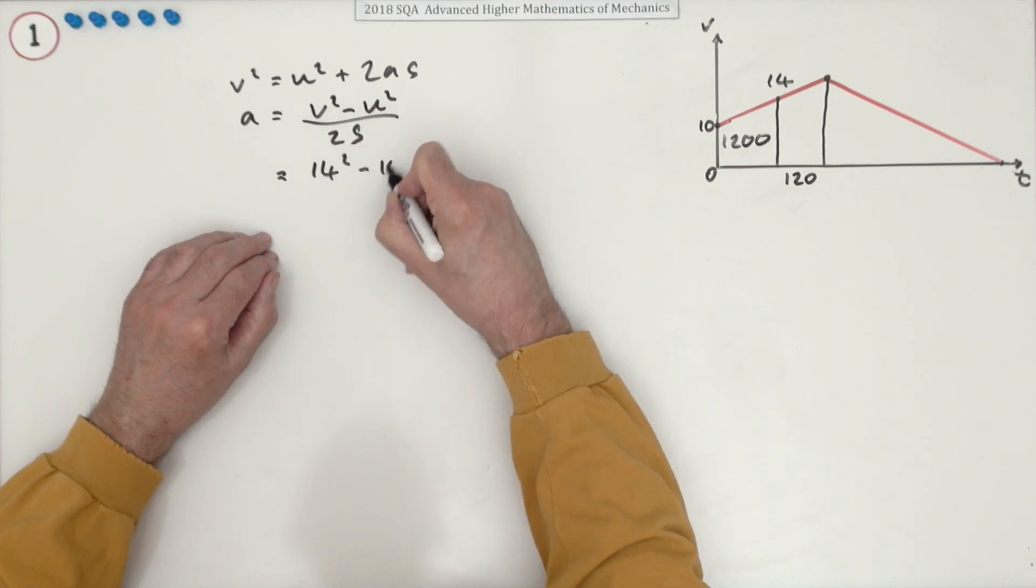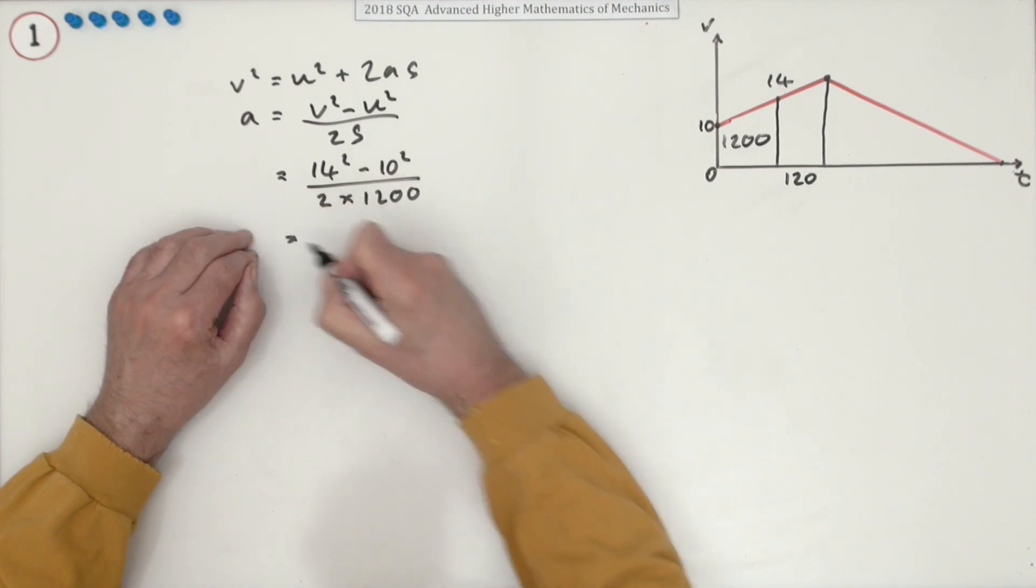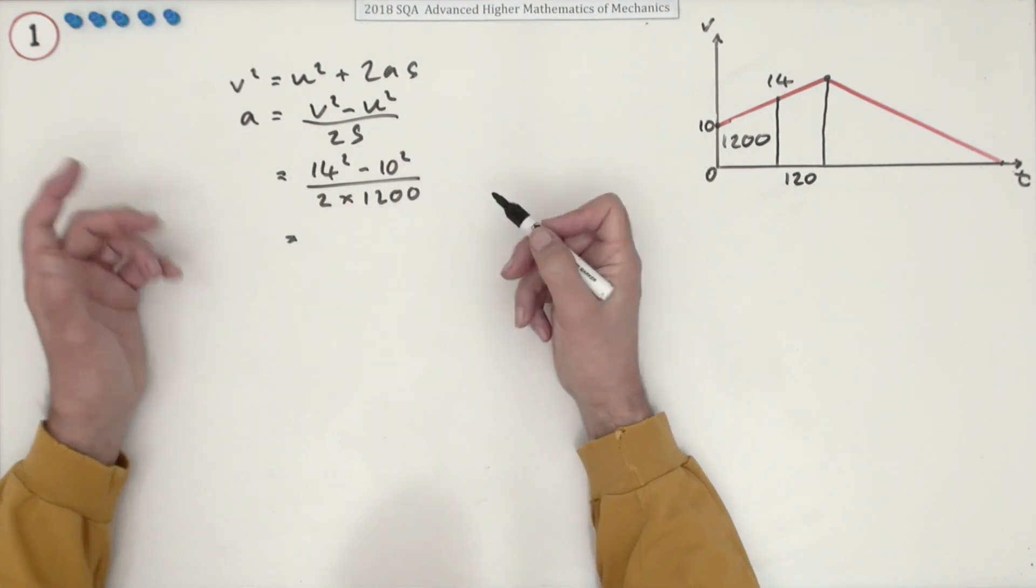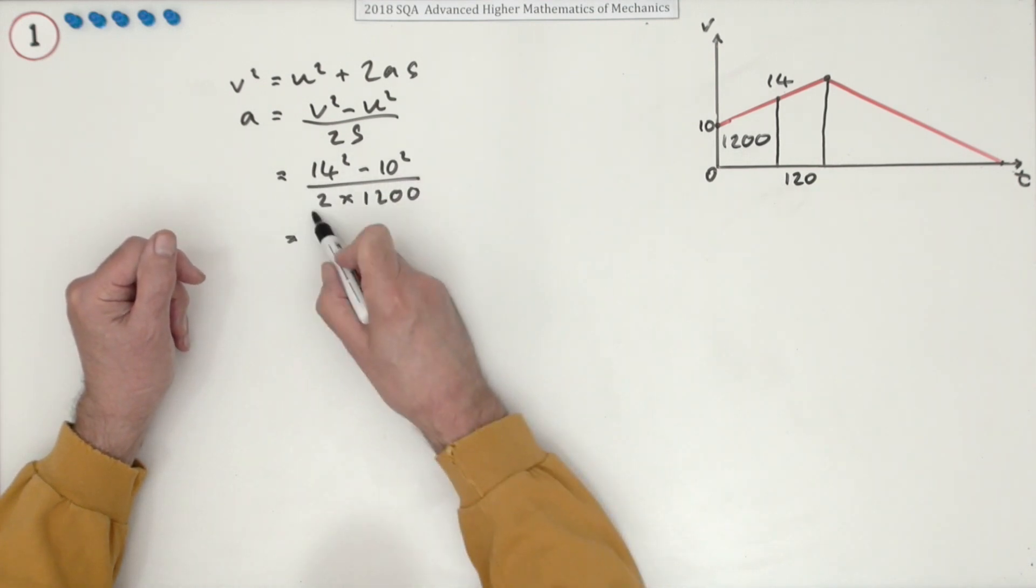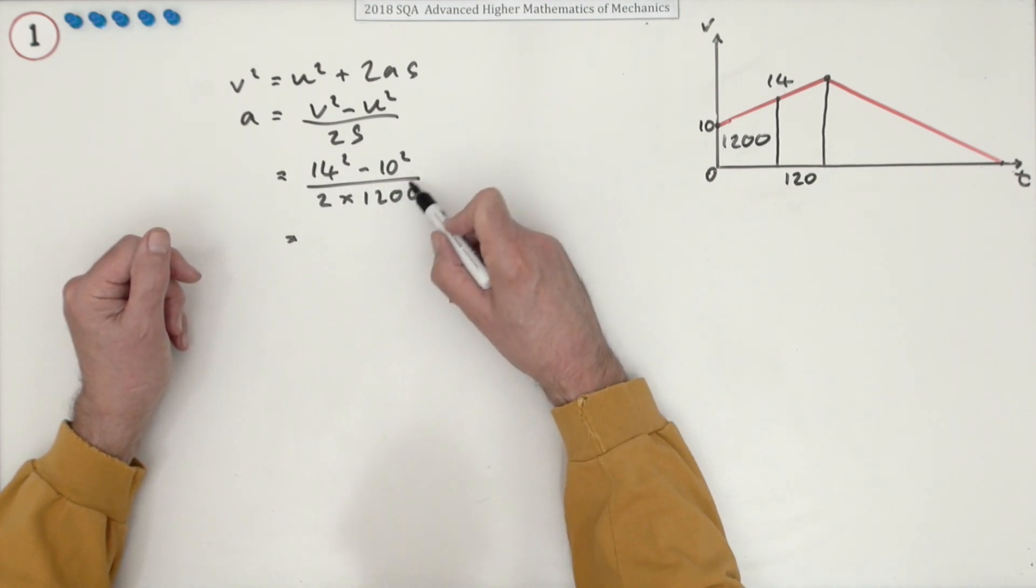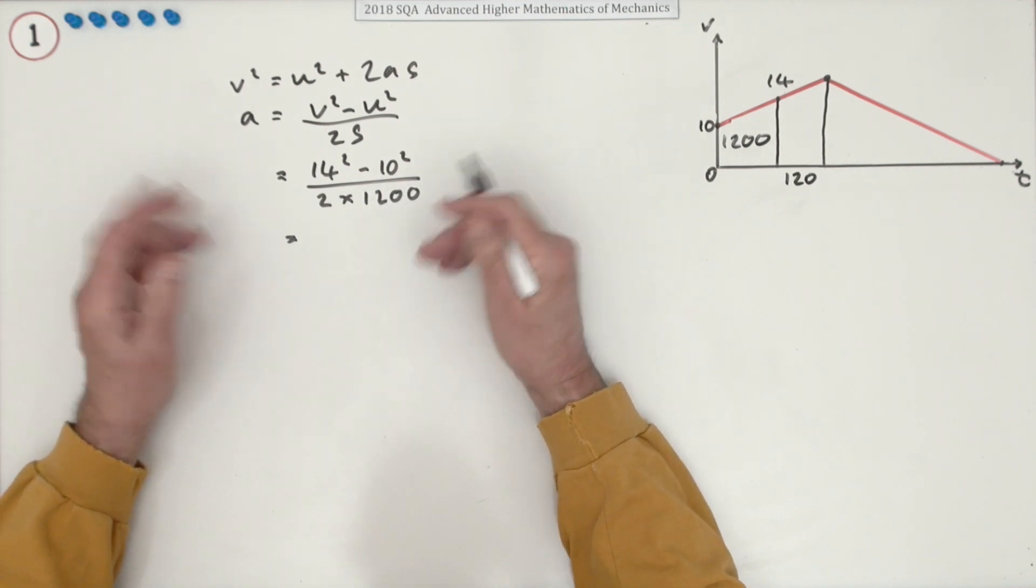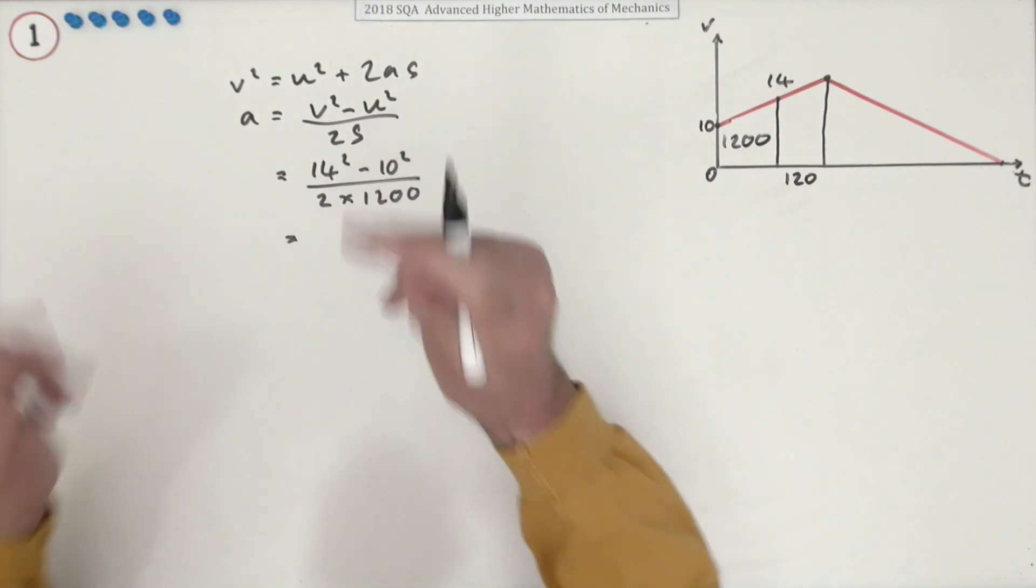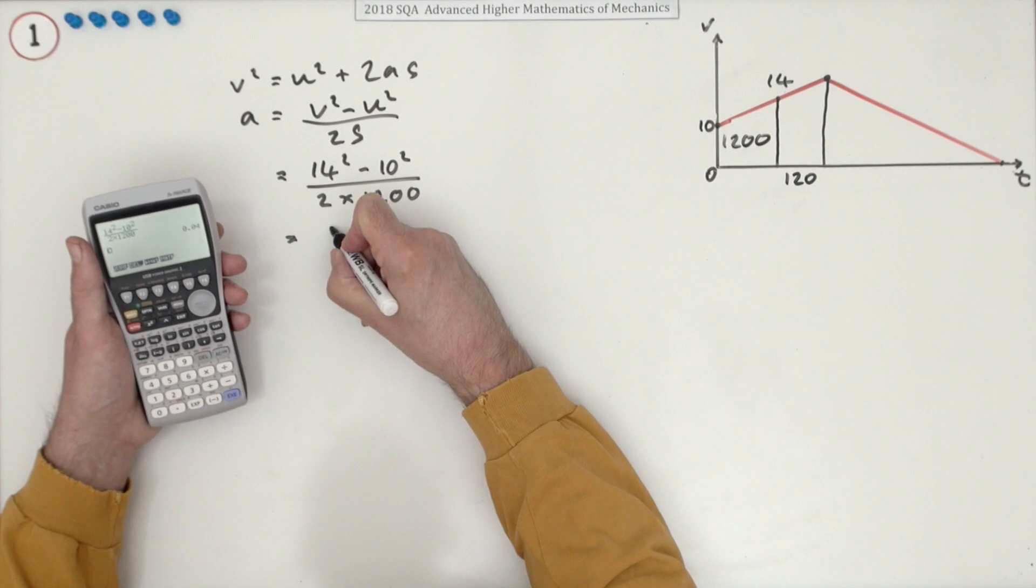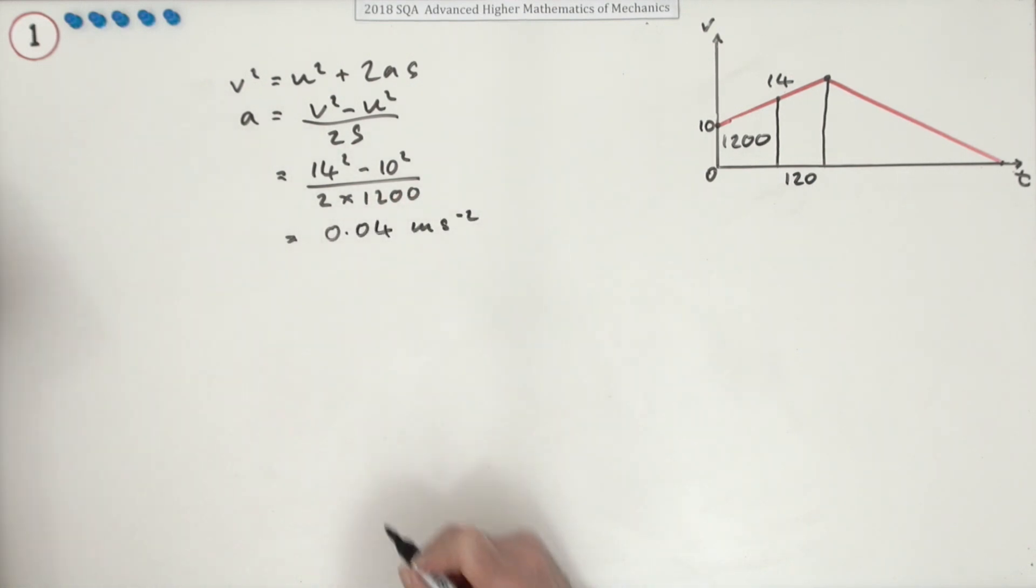14 squared minus 10 squared over 2 times 1,200. Now that would be a bad little fraction because what have you got? 196 minus 100 is 96 over 2 times that. So that's going to be half of 96 is 48 and 12 into 48. It's all going to cancel out nicely, but as well just changing to decimals because you find that may well not be a nice little number. So pop it into a calculator and you get 0.04 meters per second squared.